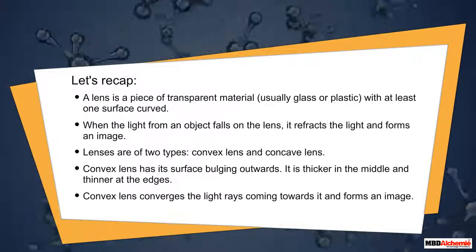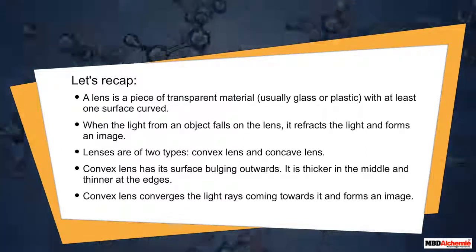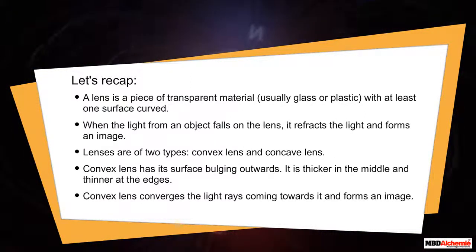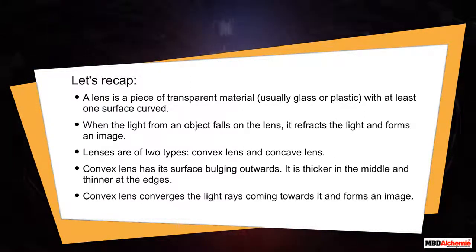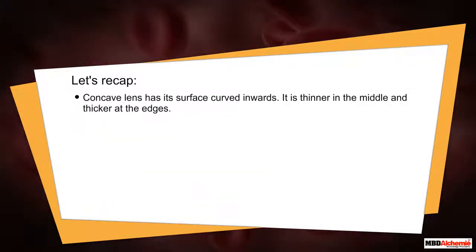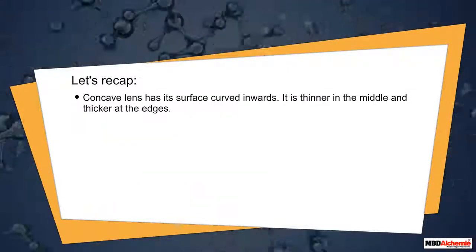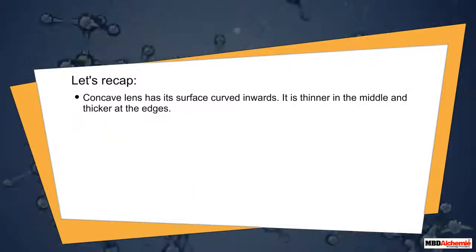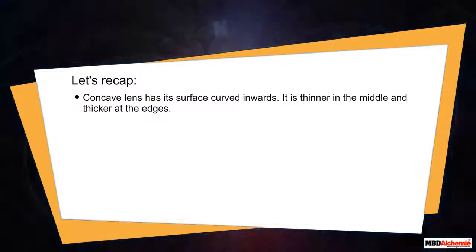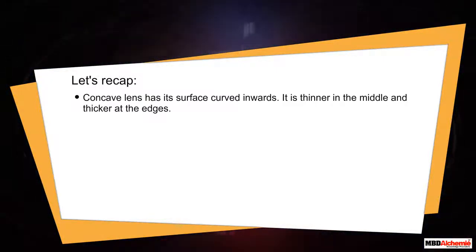A convex lens converges the light rays coming towards it and forms an image. A concave lens has its surface curved inwards — it is thinner in the middle and thicker at the edges.